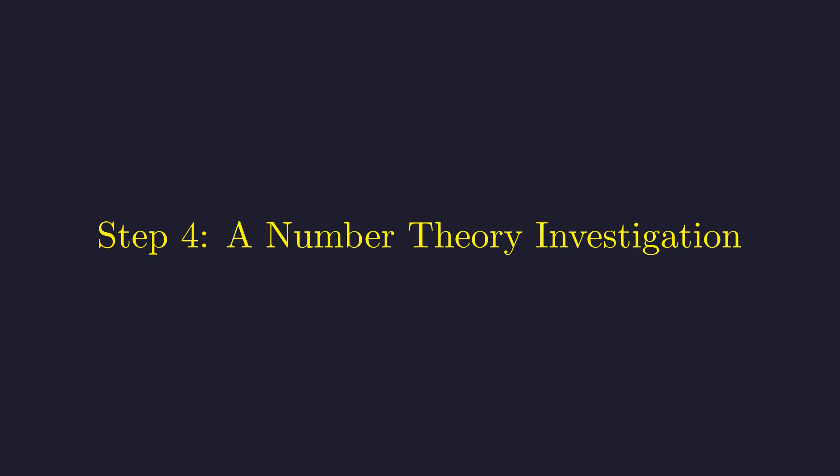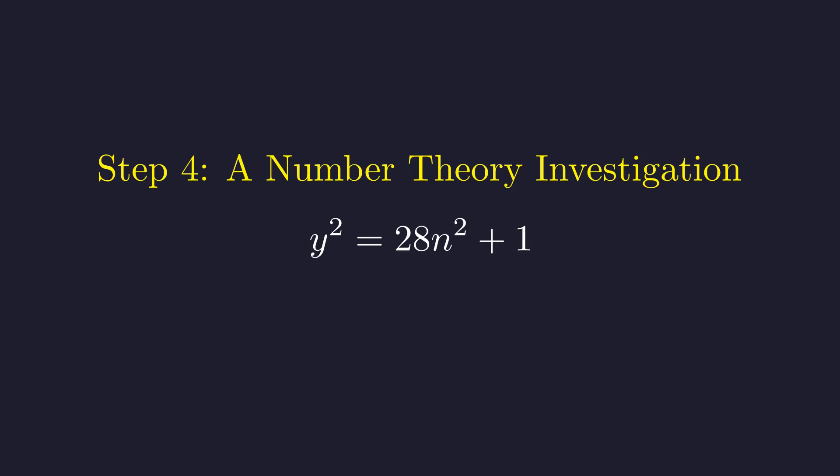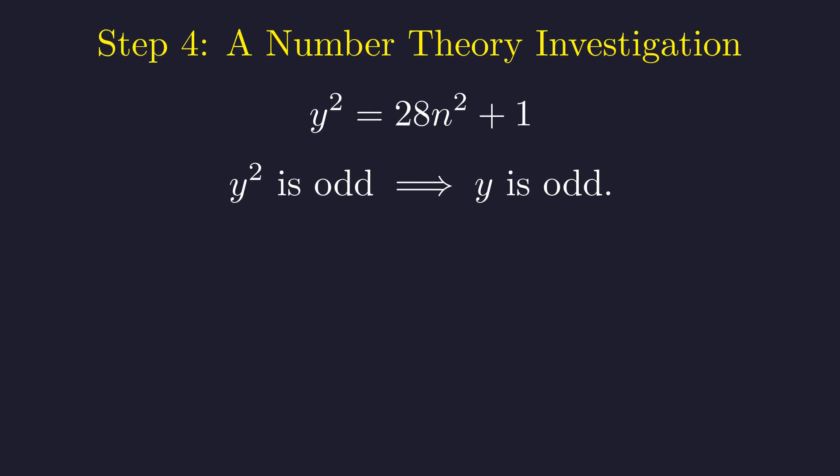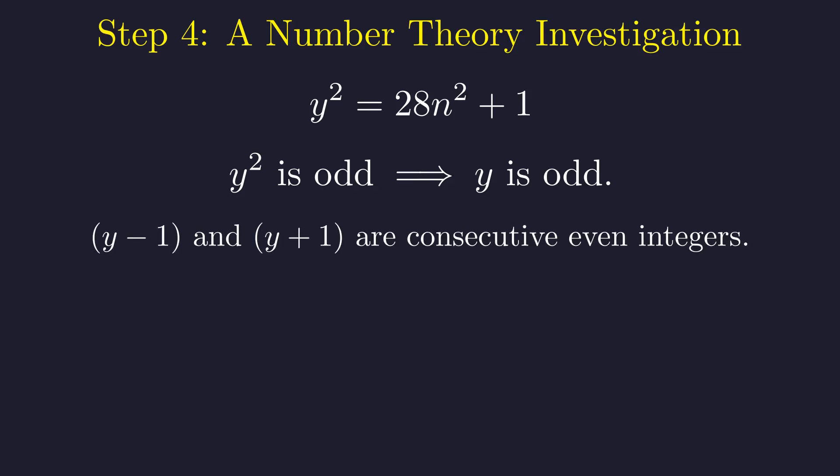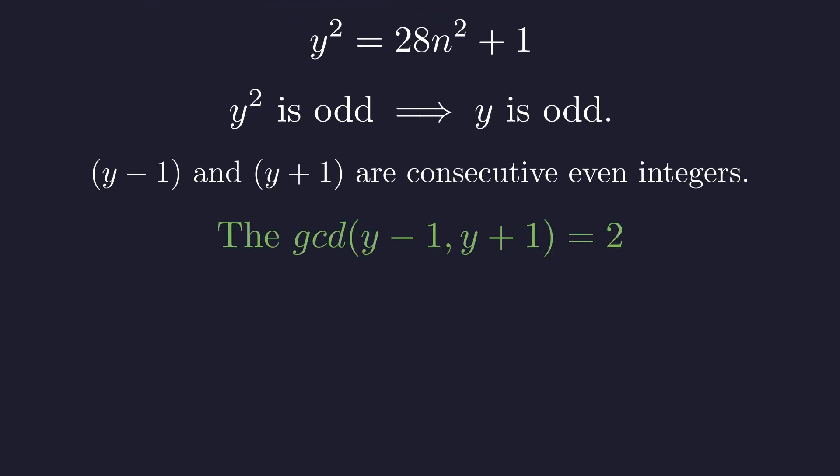Now, we will analyze the properties of the factors y minus 1 and y plus 1. From our condition, 28n² is even, so 28n² plus 1 must be odd. Since y² is odd, y itself must also be an odd integer. This means that y minus 1 and y plus 1 are consecutive even integers. The greatest common divisor of any two consecutive even integers is exactly 2.